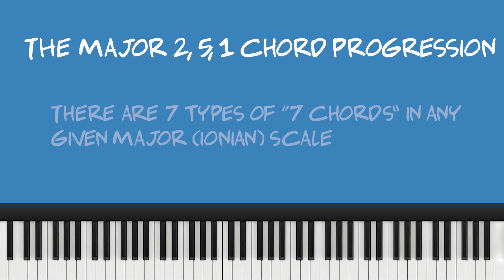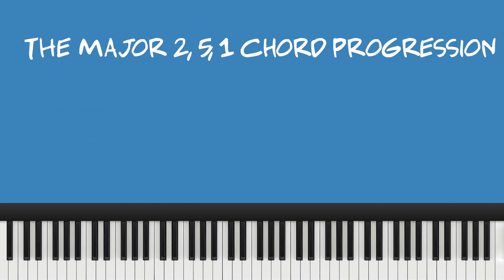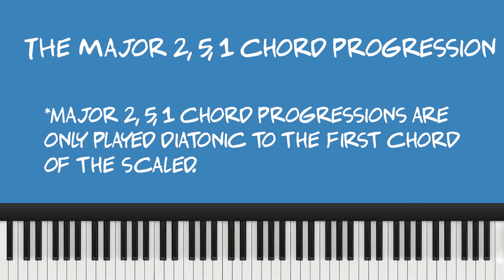So what we end up with are seven types of seventh chords in any major scale, and this works with any scale. In gospel music, we're always using some type of seventh chord. In gospel music, the major 2-5-1 chord progression is only played diatonic to the first chord of the scale, which of course is a major chord. That's why we say 'major two, five, one.'